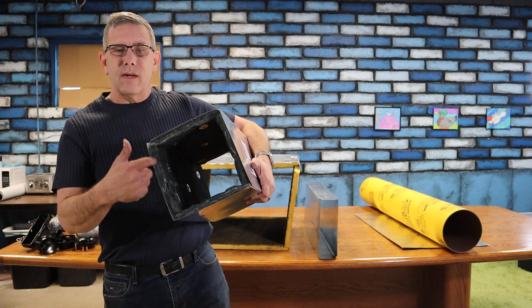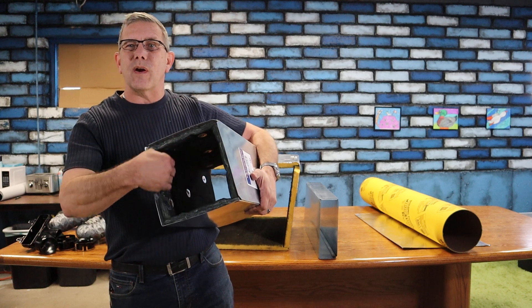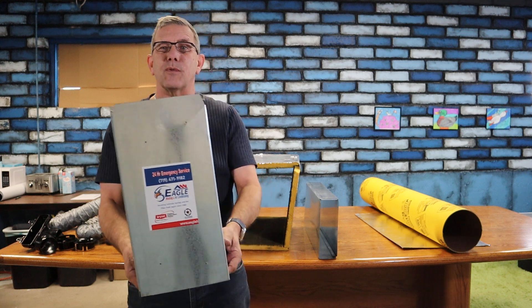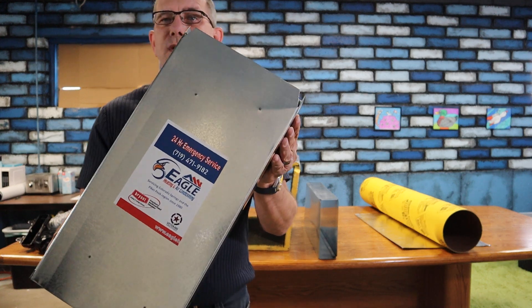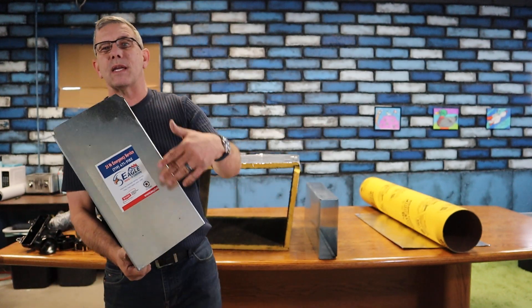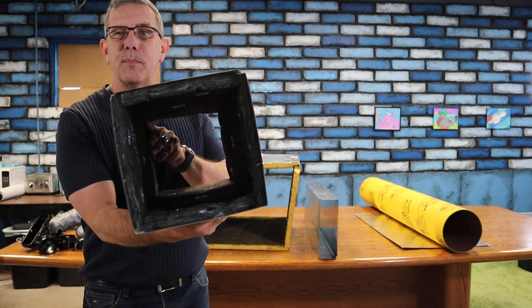It's got a fiberglass liner in here that's also covered with a layer of felt. Now, I have to give a shout out to the people who constructed this for us. That was Eagle Heating and Air Conditioning here in Colorado Springs. I told them I'm going to be shooting some videos, I need a piece of duct fabricated and literally they slapped this one together for me. Piece of cake.